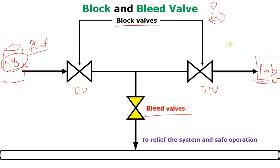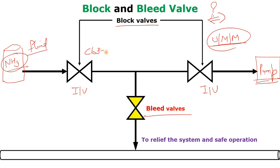Now let's suppose we have to send this pump to maintenance because some preventive maintenance will be done. In that case, first we will stop the pump, and then we will close this first valve and this second valve as well.